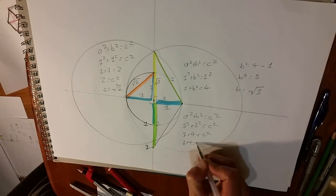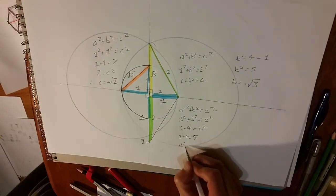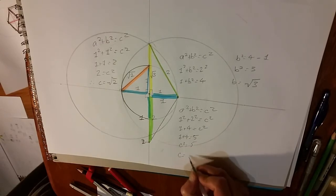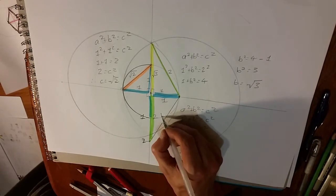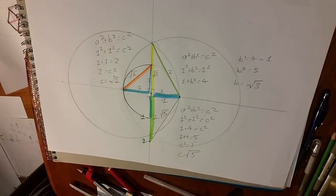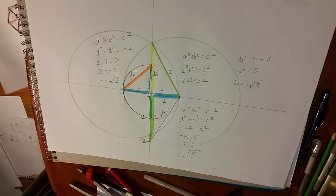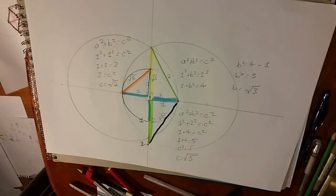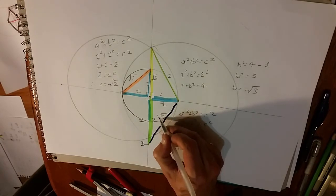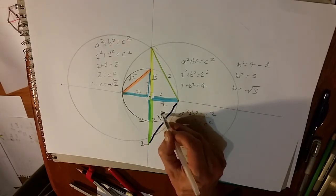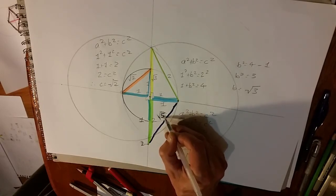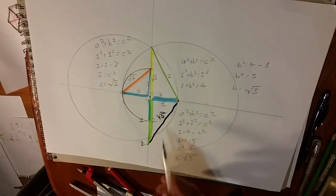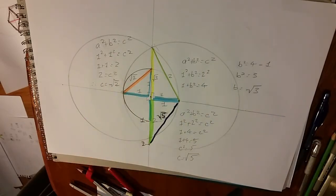Therefore C, the hypotenuse — we know a and b. 1 squared plus 2 squared equals c squared. So 1 plus 4 equals c squared. 1 plus 4 equals 5, therefore c squared equals 5, therefore c equals the square root of 5. That piece is equal to the square root of 5, in relation to the half radius of the circle being 1.